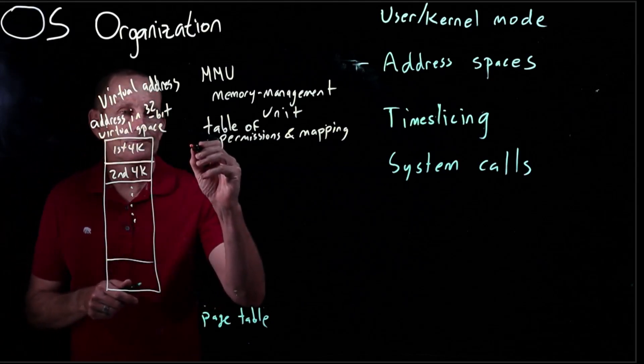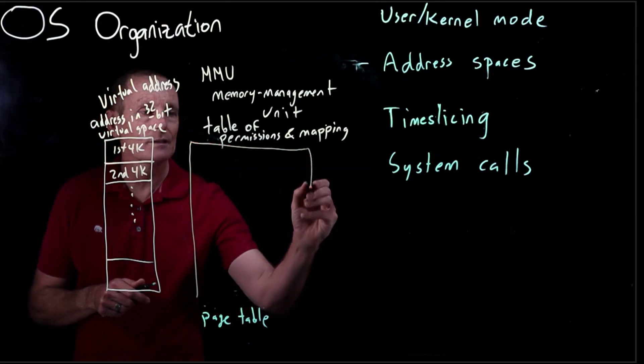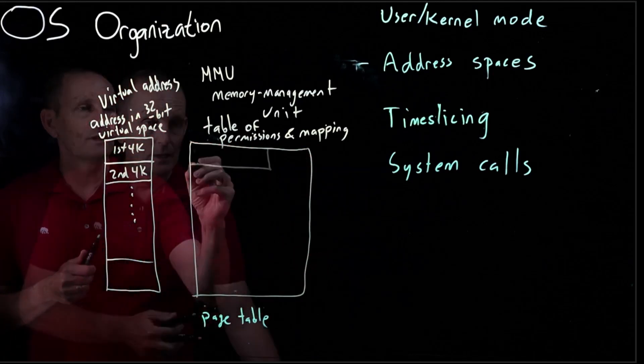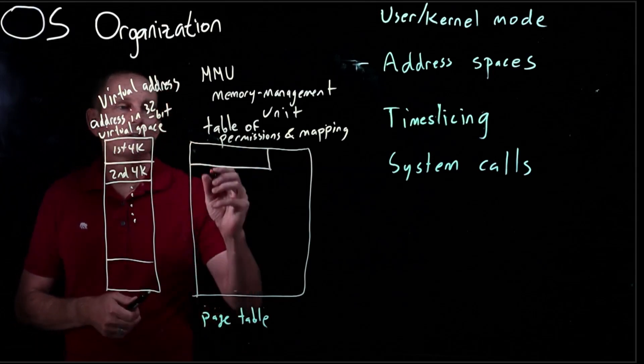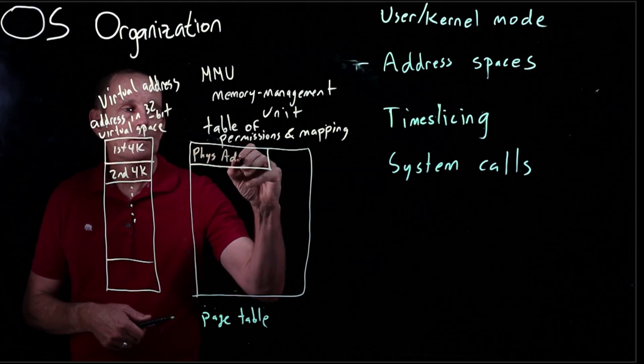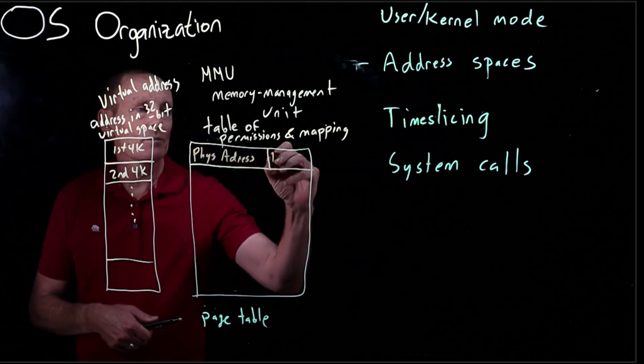And then we have this table, it's still called the page table. But it's wider. It has more per entry. In each one of these page table entries, we have the physical address. And here, then we have our permissions.